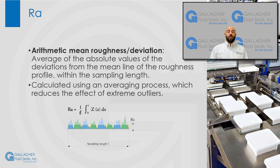The last parameter we will be discussing is RA, or arithmetic mean deviation, which is the average of the absolute values of the deviations from the mean line within the sampling length. RA is calculated using an averaging process, which reduces the effect of extreme outliers on the final RA value. In the below profile depiction, the shaded rectangular area represents RA and is equal to the hatched area of the peaks and valleys. Also shown in this image is the mean line, as well as RQ, which is larger than the RA value.